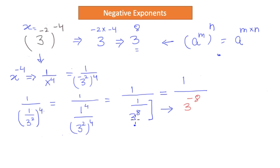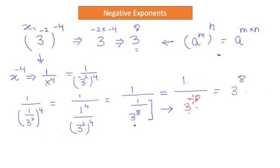We are simply reversing the powers, and this is identical to what we established in our introduction. And one more flip: 1 over 3 to the power negative 8 becomes 3 to the power 8, because something in the denominator, when it goes to the numerator, if the power is negative it becomes positive. And this result is the same as the result we got in the first place.